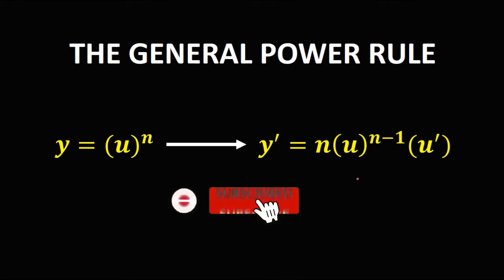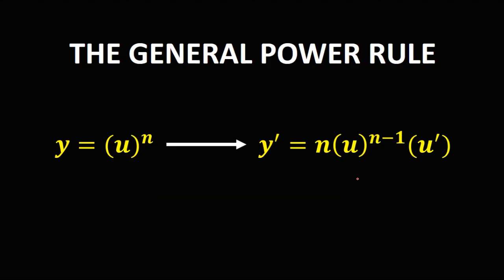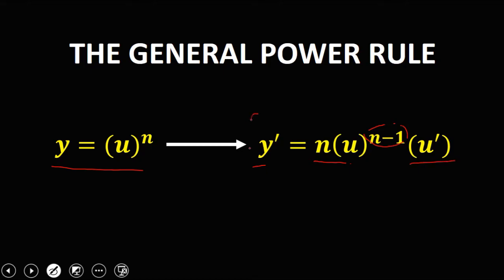Let's have this topic: the derivative using the General Power Rule. We have y equals u to the power n. To get the derivative, y prime equals n times u to the power n minus 1, times u prime — the derivative of u. This is the formula for the General Power Rule.